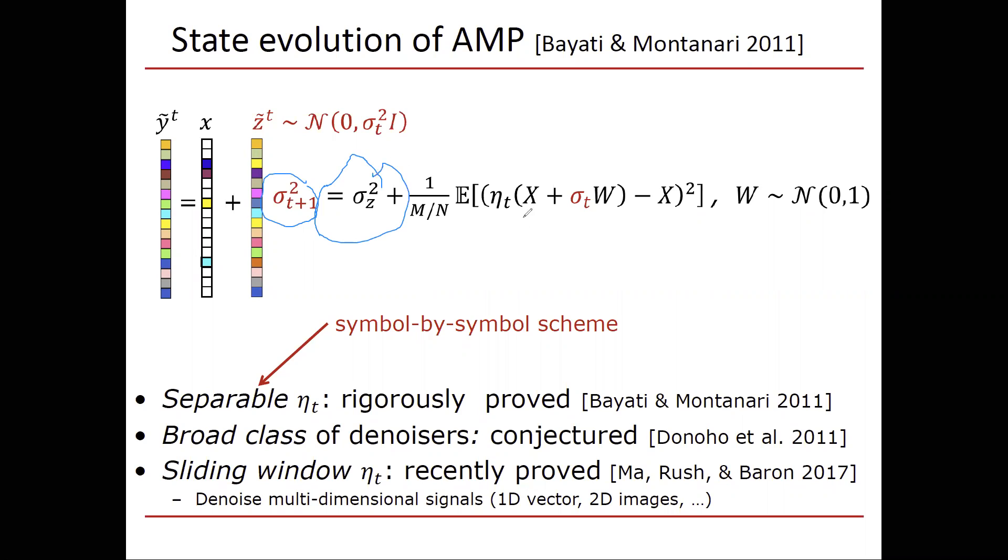So sigma t plus one squared is sigma squared z, the actual noise in the linear inverse problem, plus one divided by m over n. So recall, m over n is our measurement rate, it's the aspect ratio of the matrix, one over the aspect ratio times, what we have here in expectation is basically the mean squared error. What we have here is the mean squared error, the expected squared error, so that's the mean squared error in the denoising problem.